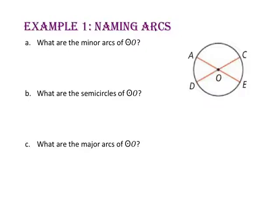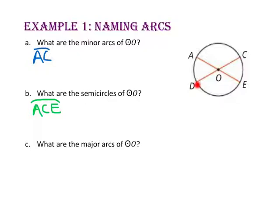To make sure I don't miss an arc, I'm going to start with one point. Let's start with point A. Follow that arc along to the first point after point A, point C. Since arc AC is less than 180 degrees, it is a minor arc. Next, starting again at point A, past point C, and moving on to point E — since arc ACE is exactly 180 degrees, it is a semicircle. Again starting with point A, passing through points C and E and continuing on to point D, we have a major arc because it is larger than 180 degrees, so arc ACD is a major arc.